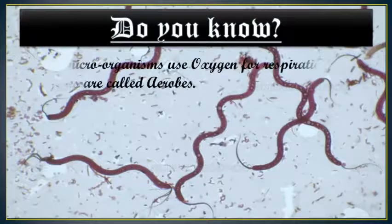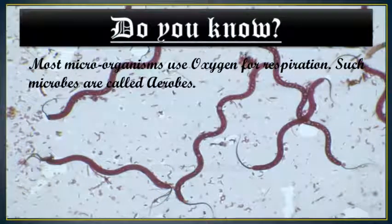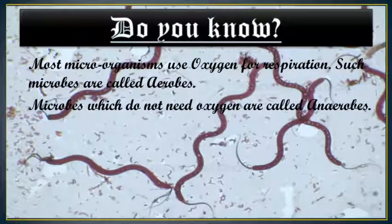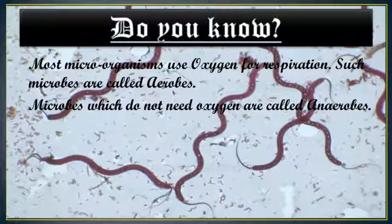Most microorganisms use oxygen for respiration, and such microbes are called aerobes. Microbes which do not need oxygen are called anaerobes. So these are two different types of microorganisms: aerobes, which use oxygen, and anaerobes, which do not use oxygen.